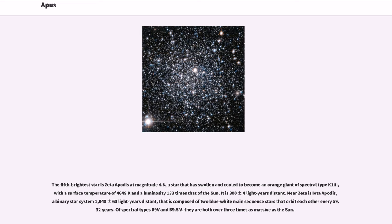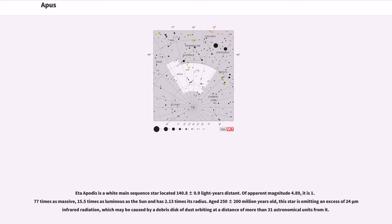Eta Apodis is a white main-sequence star located 140.8 plus or minus 0.9 light-years distant. Of apparent magnitude 4.89, it is 1.77 times as massive, 15.5 times as luminous as the Sun and has 2.13 times its radius. Aged 250 plus or minus 200 million years old, this star is emitting an excess of 24 micrometer infrared radiation, which may be caused by a debris disk of dust orbiting at a distance of more than 31 astronomical units from it.